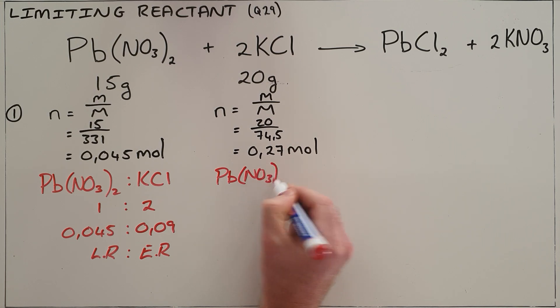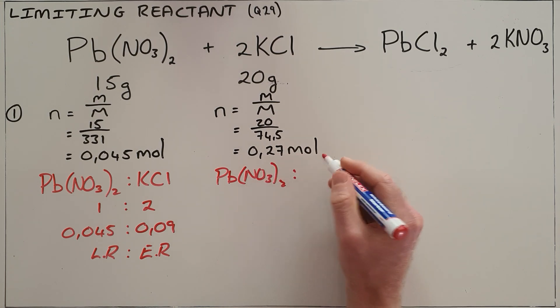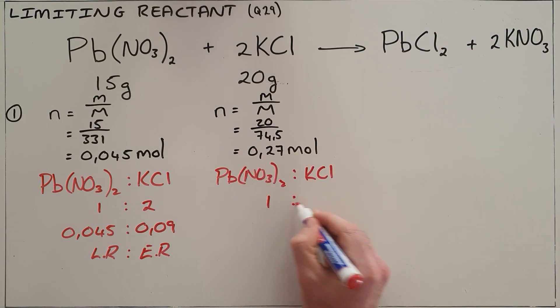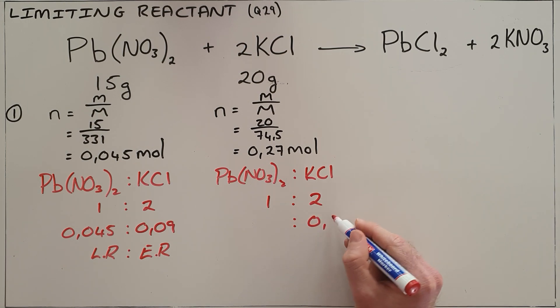If we again look at the ratio of lead nitrate to potassium chloride, we can see from the balanced equation that it's one to two, but now we assume that we use up all of the potassium chloride.